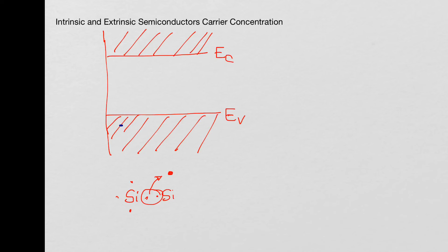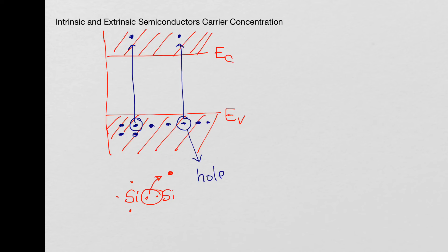All the electrons are here in the valence band, and some of these electrons can actually get energies above EC and move up into the conduction band — not all of them, just a few. These electrons leave holes behind in the bonds. So when an electron escapes, you have a hole, and these free electrons have energies greater than EC and can move about.